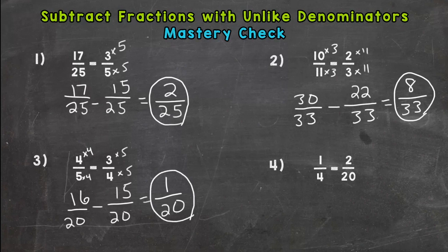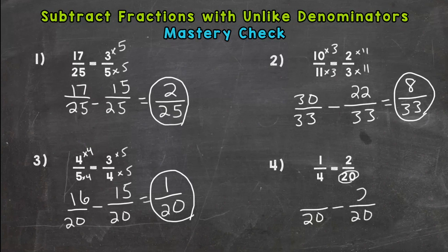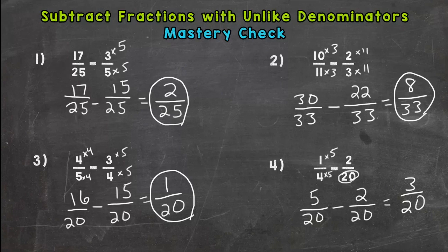Lastly, number 4. We have a 4 and a 20, so our common denominator is going to be 20. The second fraction already has that common denominator, so I'm just going to drop my 2. We don't need to rename. Four times 5 is 20, 1 times 5 is 5. 5 minus 2 is 3, keep the denominator the same, and we get 3/20. That is in simplest form, so you are done.